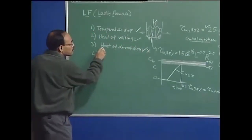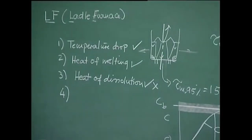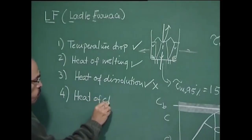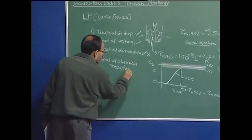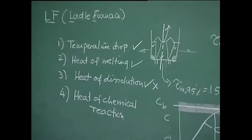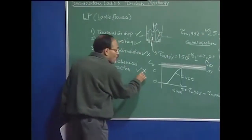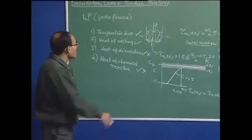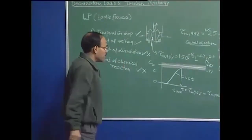Similarly, we have temperature drop, heat of melting, heat of dissolution, and heat effect of chemical reactions — the alloying addition may dissolve and react with oxygen or other elements present, and some amount of heat may be evolved or absorbed. So there are many heat demands for secondary steelmaking processes, and we must have arrangements for heating the ladle.